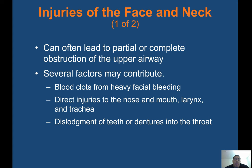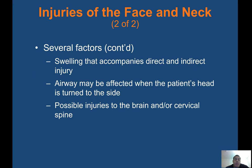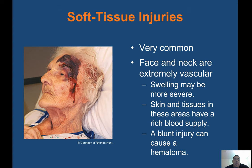Injuries of the face and neck can often lead to partial or complete obstruction of the upper airway. Several factors may contribute: blood clots from heavy facial bleeding, direct injuries to the nose and mouth, larynx, and trachea. Dislodgment of teeth or dentures into the throat. Swelling that accompanies direct and indirect injury. The airway may be affected when the patient's head is turned to the side. Possible injuries to the brain or spinal cord. Soft tissue injuries are very common. The face and neck are extremely vascular, so swelling may be more severe.